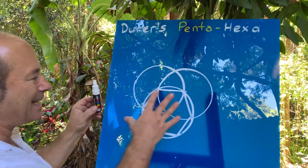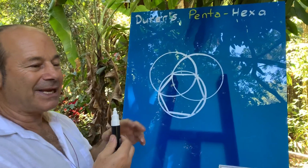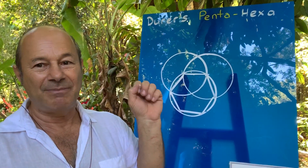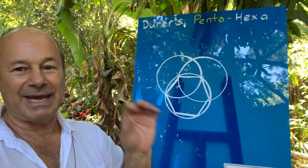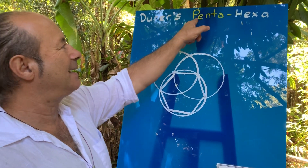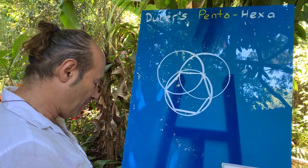This is what DNA is all about. The molecular structure of DNA is based on pentagonal and hexagonal molecular structure. We call it pentahexa.